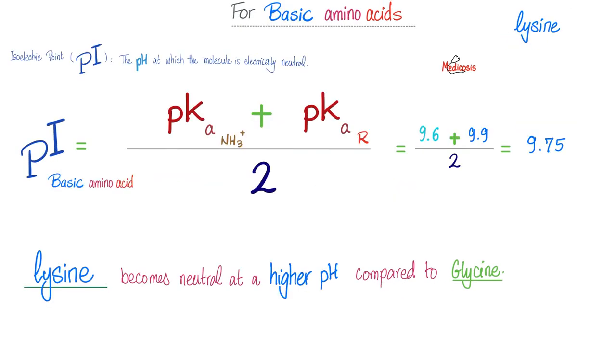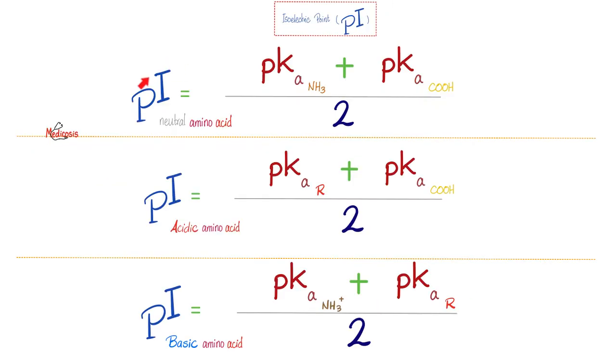Lysine. I promised you a great story about lysine. Lysine is a totally different system. This doofus has two aminos. So it has rigged the game. Forget about the carboxyl. We'll add the amino to the R. 9.6 plus 9.9 over 2. You get 9.75. Of course, this is higher than glycine. It's also higher than the pI of the glutamic acid. Therefore, lysine becomes neutral at a higher pH compared to glycine. If you want to put them all together, here's the pI. If you're talking about a neutral amino acid, you count the amino and the carboxyl. But if it's acidic, you count the R and the carboxyl. If it's basic, forget about the carboxyl.